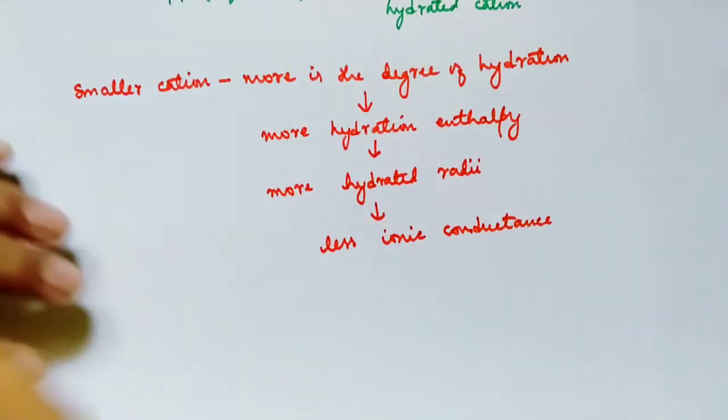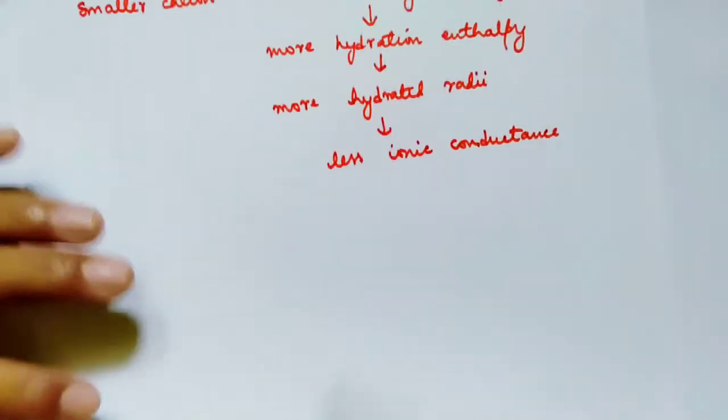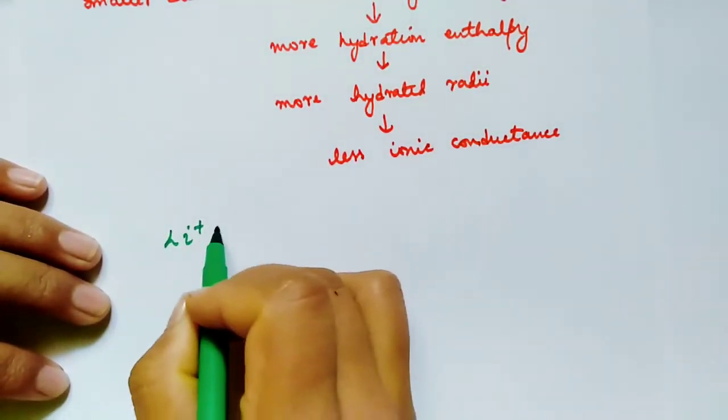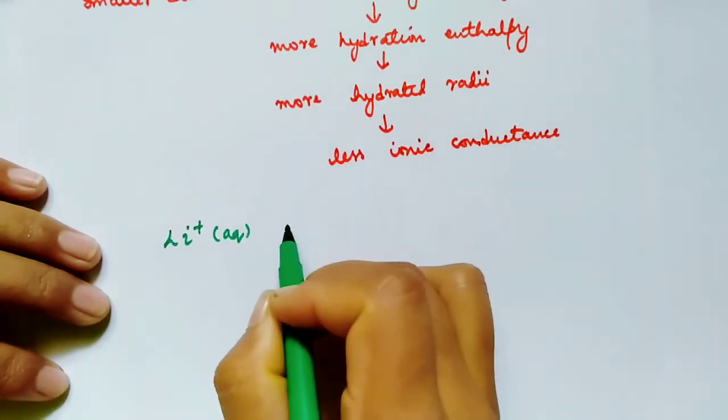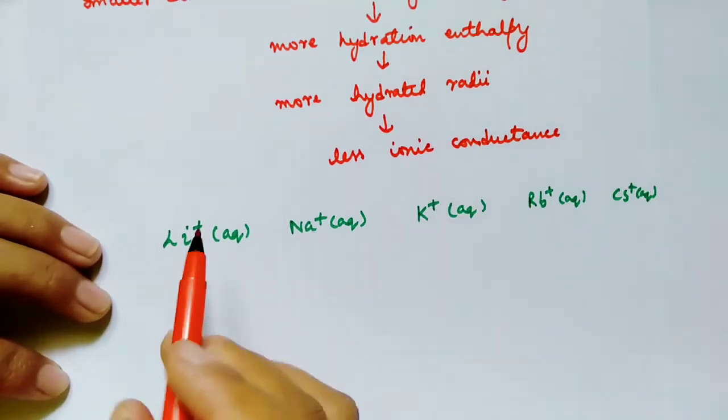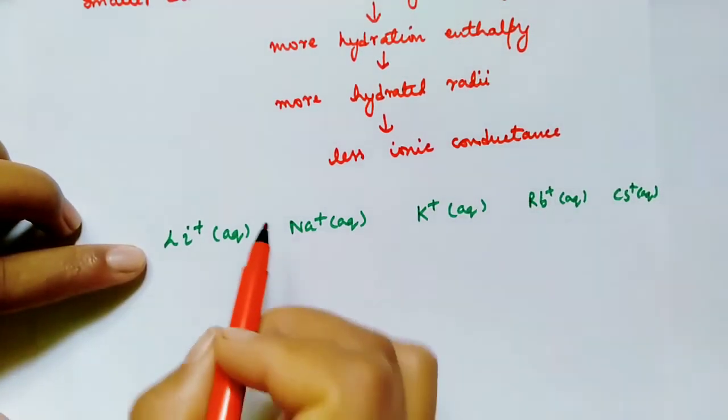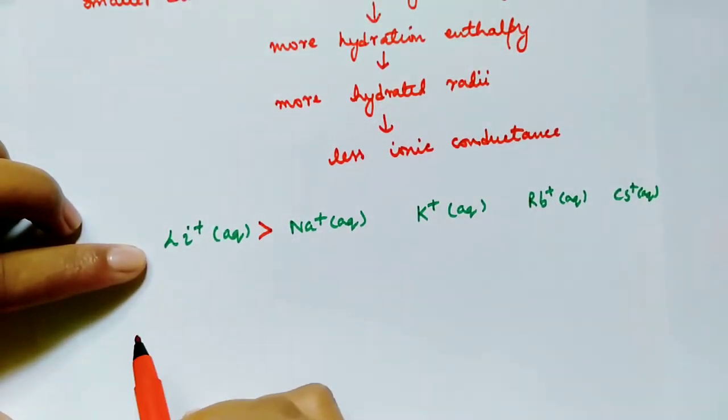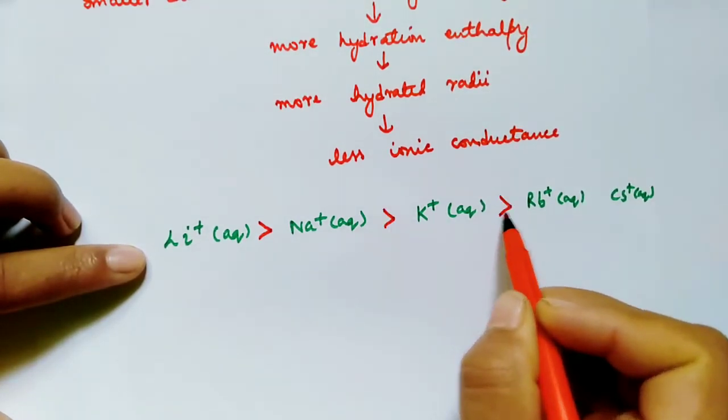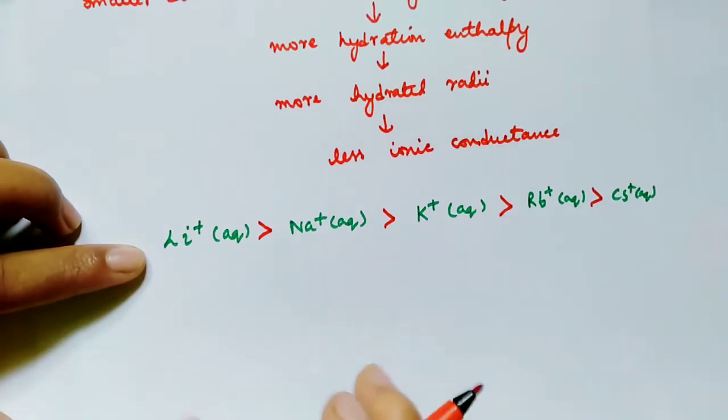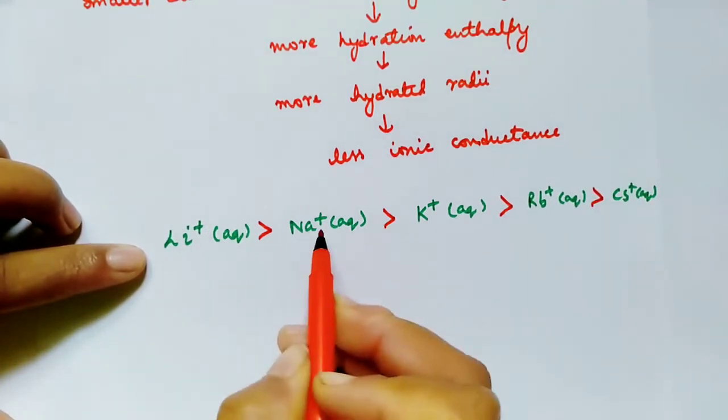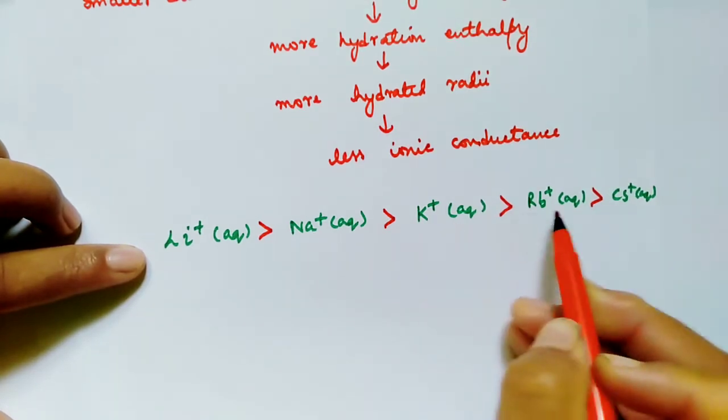Using this principle, lithium+ has more degree of hydration than sodium+, potassium+, rubidium+, and cesium+. Also, the hydration enthalpy in lithium+ is more than that in sodium+, potassium+, rubidium+, and cesium+.